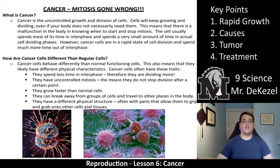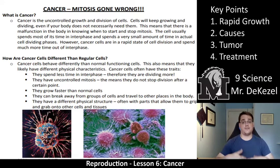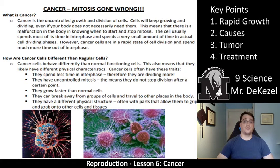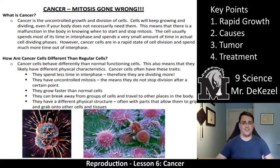This also means that cancer cells likely have different physical characteristics. They spend less time in interphase, they have uncontrolled mitosis, they do not stop dividing — they just keep dividing. They grow faster than normal cells. They can break away from groups of cells and travel to other places in the body, which is not something that happens in a regular cell. They also have different physical structures that allow them to grip and grab onto other cells and tissues, making them invasive.